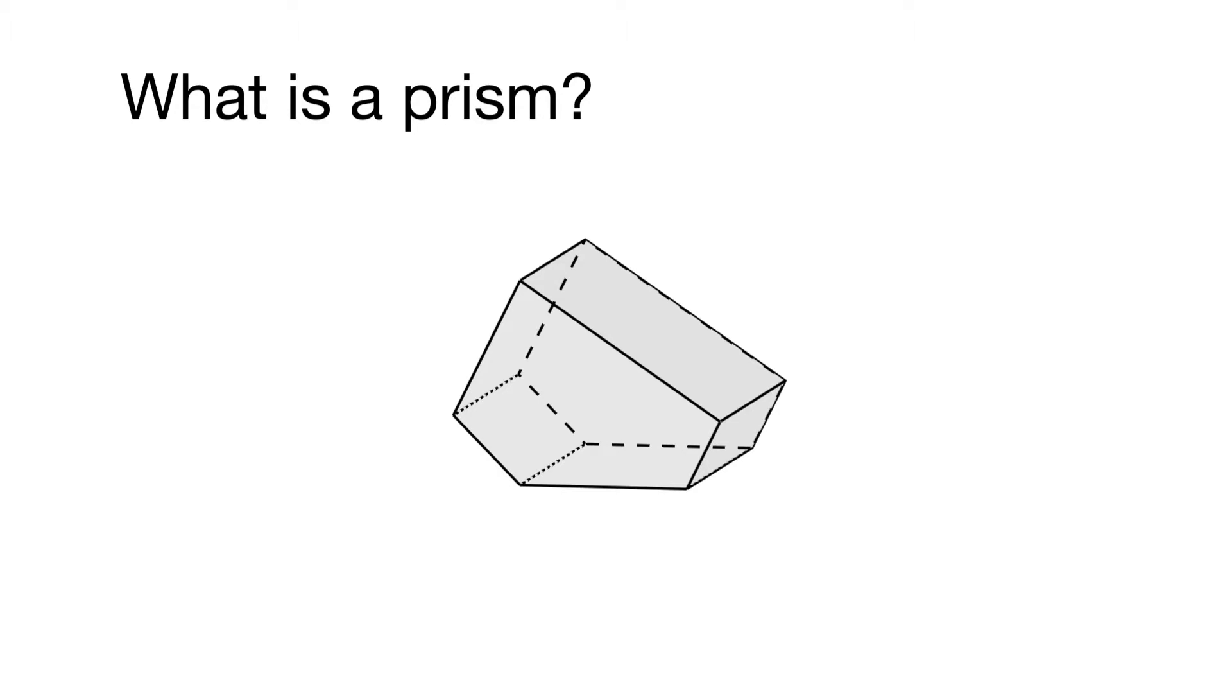Well it must have a face that we'll call the base and the base must be a polygon, that's a straight-sided shape. And then it must have a second base that is identical to the first, so the same polygon. It's a translation of the first base in 3D space so it can't be rotated at all.